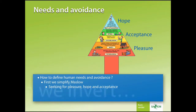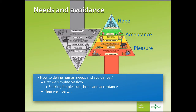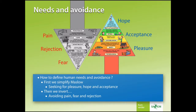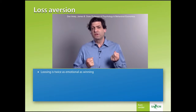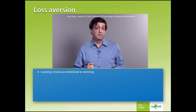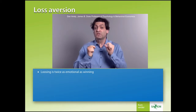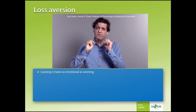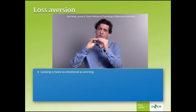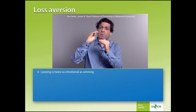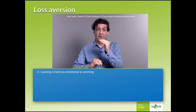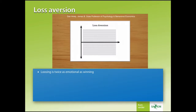Now we can invert the pyramid. It's about avoiding pain, fear, and rejection. We don't like to lose, and everything we own is more valuable. How does that work? One of the most interesting findings in behavioral economics, and definitely one of the earliest findings, has been this idea of loss aversion. Loss aversion is the idea that we get happy when we make money, but we really suffer when we lose money. For example, ask yourself: